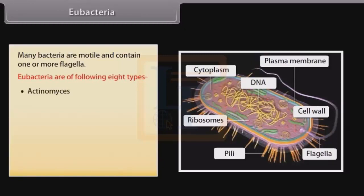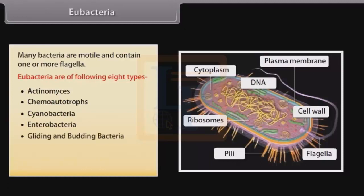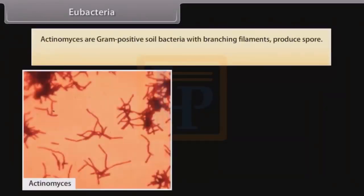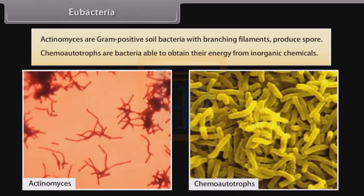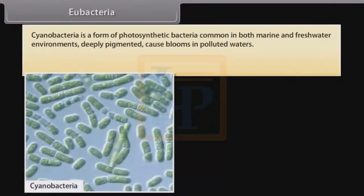Eubacteria are of eight types. Actinomyces are gram-positive soil bacteria with branching filaments that produce spores. Chemoautotrophs are bacteria able to obtain their energy from inorganic chemicals. Cyanobacteria are a form of photosynthetic bacteria common in both marine and freshwater environments; deeply pigmented, they cause blooms in polluted waters.